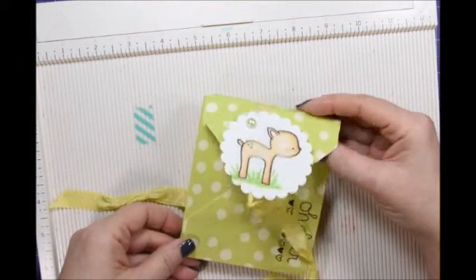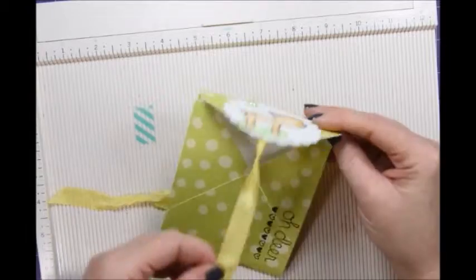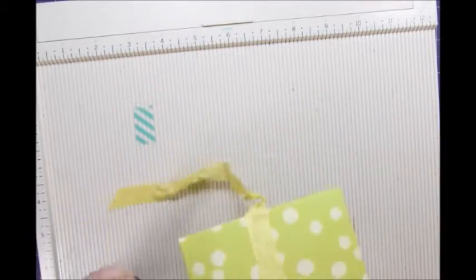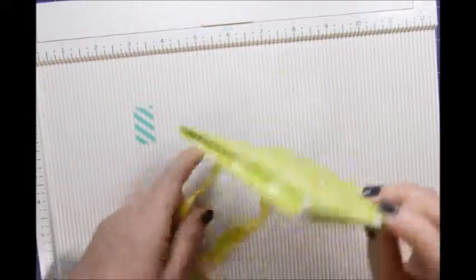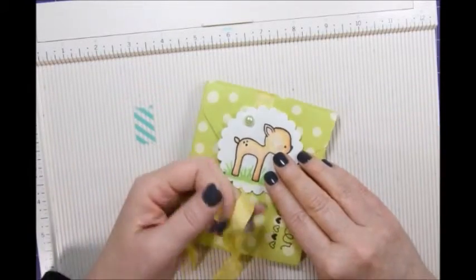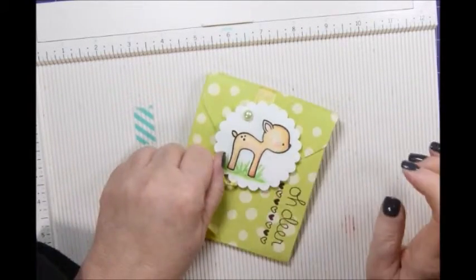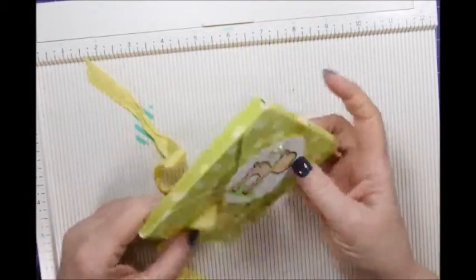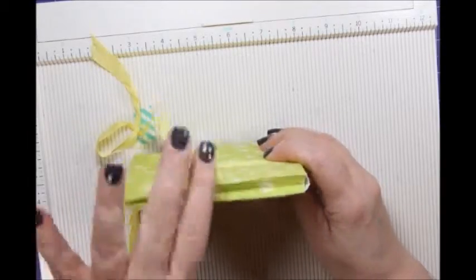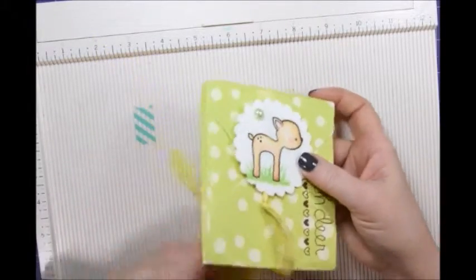Then you can decorate it any way you wish. This one has the little deer on the top. I used a little bit of glue to put some ribbon around it to hold it closed. And a little tie, you know, there on the front. So I think you can find quite a few uses for this cute little gusset bag. So thank you for joining me today.